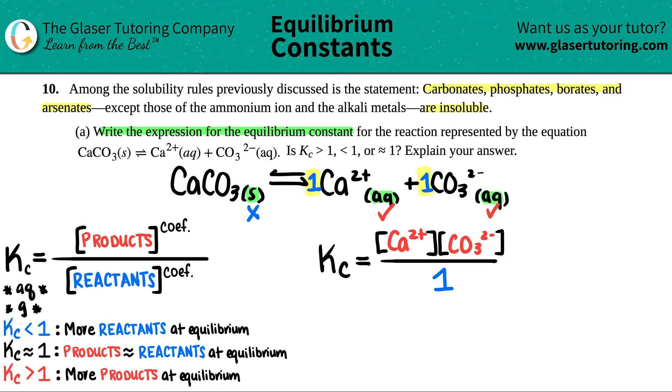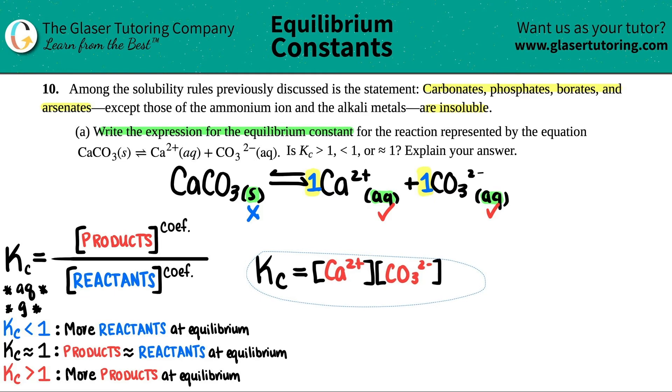Now you can just simplify this. Usually on tests or quizzes, you're not going to see it being over one. Remember, anything over one is itself. So basically I can get rid of this, and you'll probably see it like this on your test or quiz. And that would be the equilibrium constant. That's the answer to the first part.